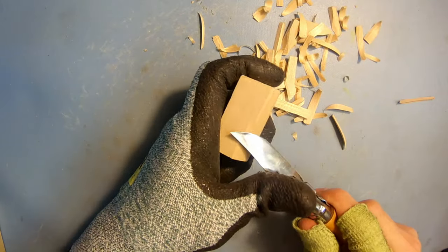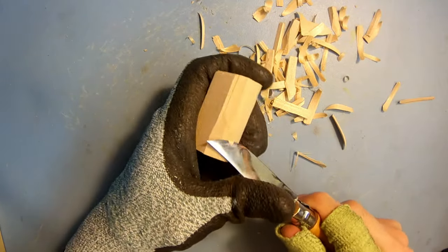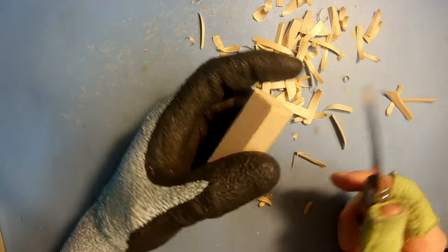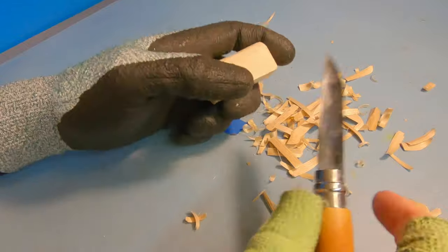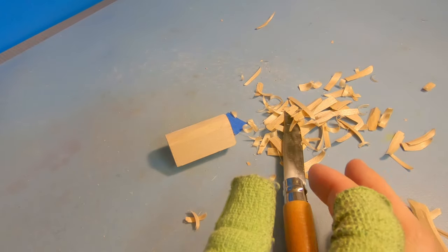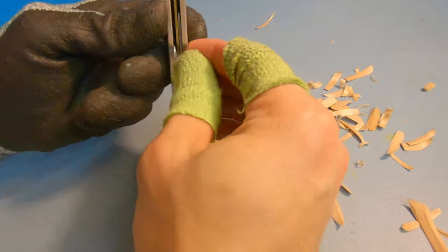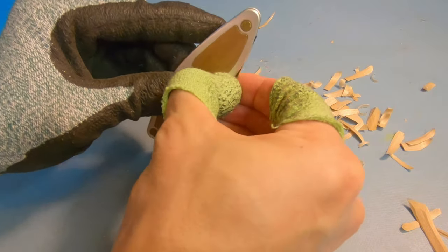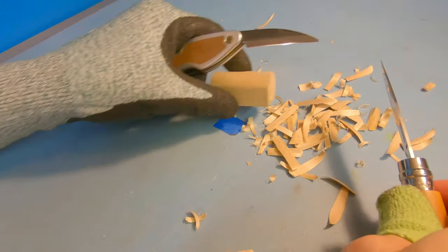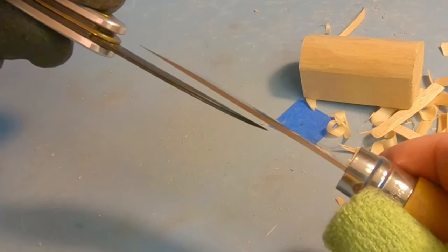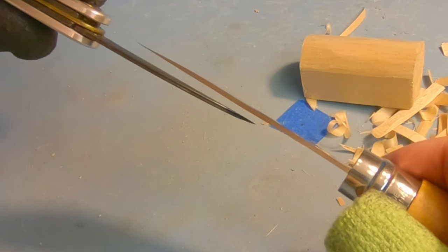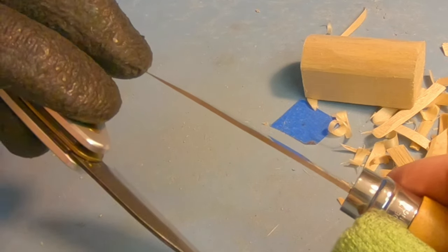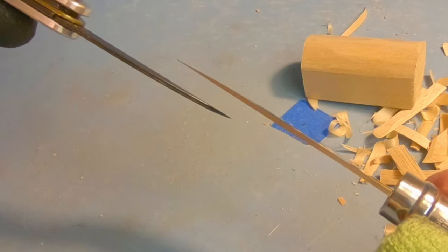And like I was saying it has a super thin blade. As you can see it's just gliding right through this basswood. If you want to see a comparison to another knife, I got the FlexCut whittling jack here. You can see it's just a hair thinner all the way around and on the tip it's much thinner than the FlexCut version.